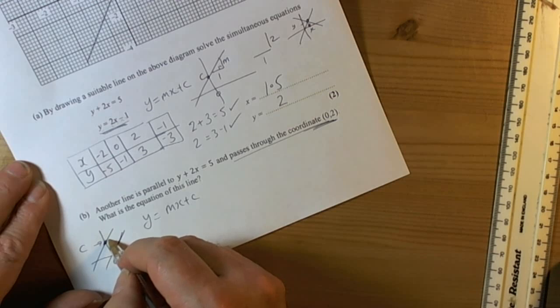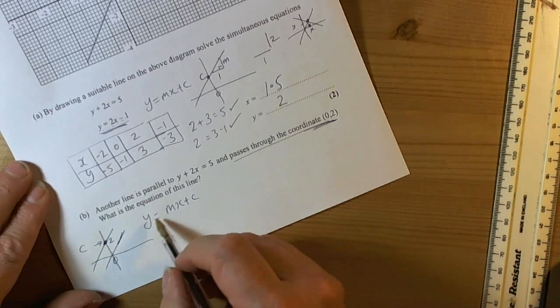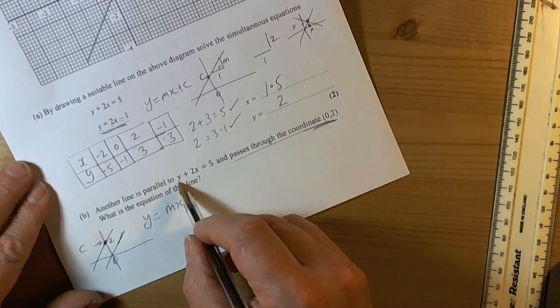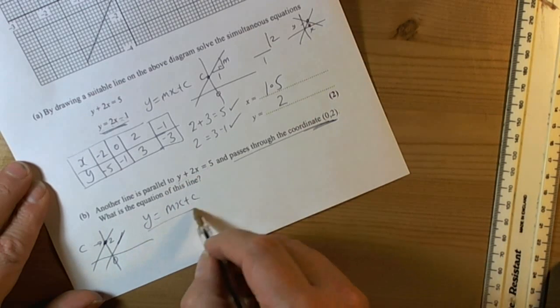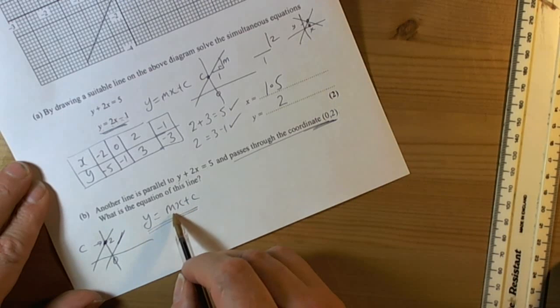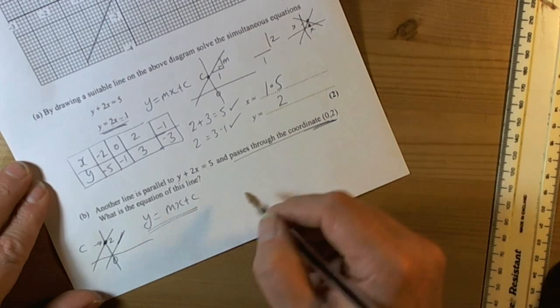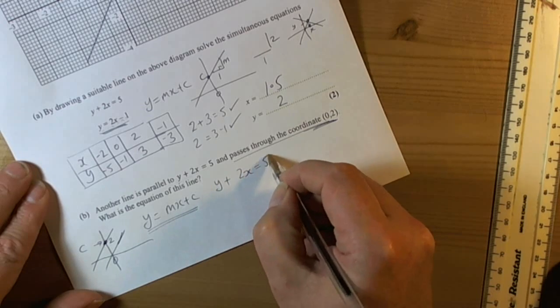Because we want the equation to be parallel, we need to know the gradient of this line. We must have the equations in this format to be able to calculate the value of the coefficient in front of x, which will be the gradient of the line. So we need to do a quick rearrangement of y plus 2x equals 5.